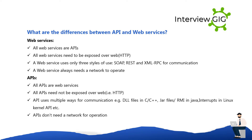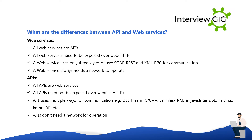What are the differences between API and web services? Web services: all web services are APIs; all web services need to be exposed over the web (HTTP); a web service uses only three styles — SOAP, REST, and XML-RPC — for communication; and a web service always needs a network to operate. APIs: not all APIs are web services; APIs need not be exposed over HTTP; APIs use multiple ways for communication (e.g., DLL files in C/C++, JAR files/RMI in Java, interrupts in the Linux kernel); and APIs don't need a network for operation.